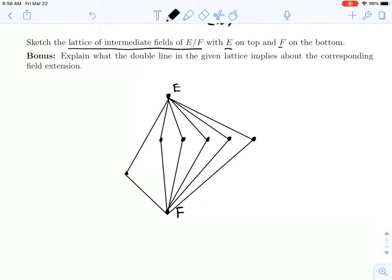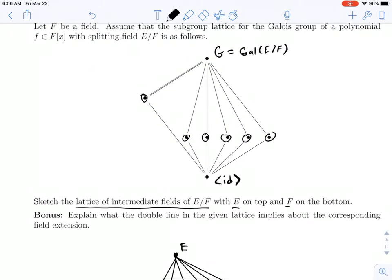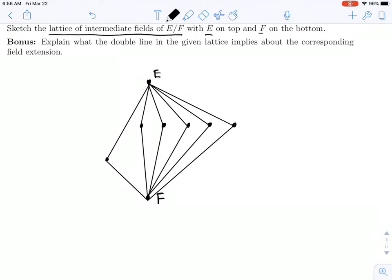Now there's a bonus question, which asks you to explain what the double line means. So up here we had a double line, and that'll actually then, down here, we'll get a double line. And the question is, what does that signify?